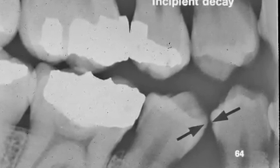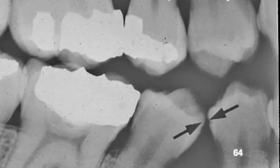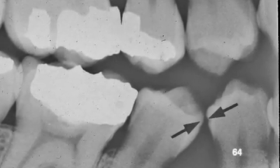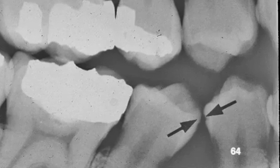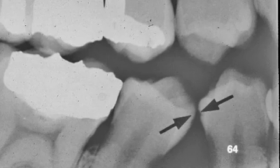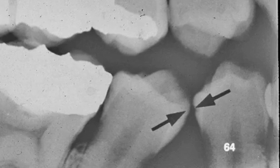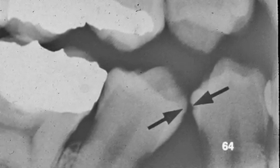This is the patient's right side on the bite wing. The arrow to your left points to a radiolucency — incipient decay. Incipient decay is less than halfway into the enamel.